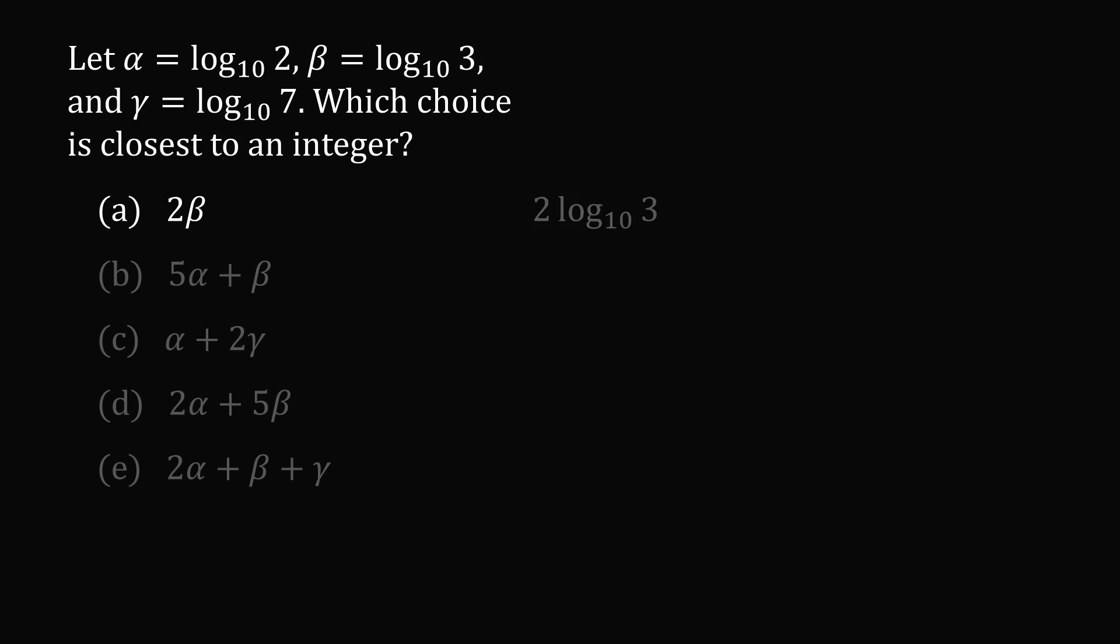So 2 beta is equal to 2 multiplied by log base 10 of 3. We can use the rules of logarithms to get that this is equal to log base 10 of 3 squared, and 3 squared is equal to 9. So answer choice A is equal to log base 10 of 9.